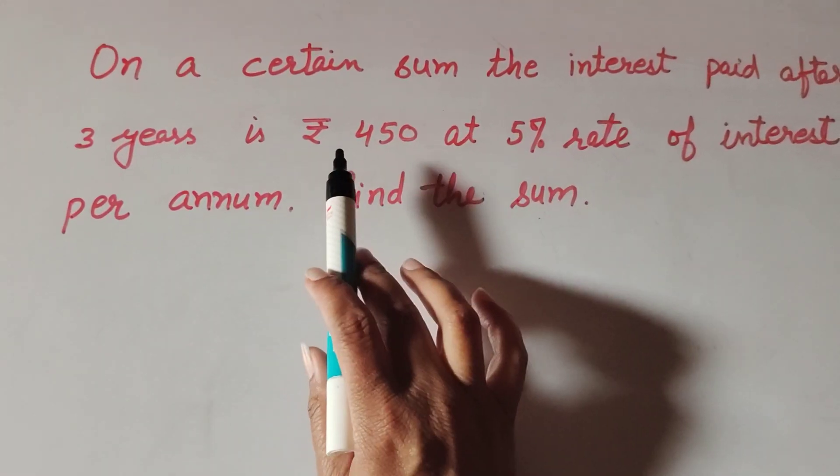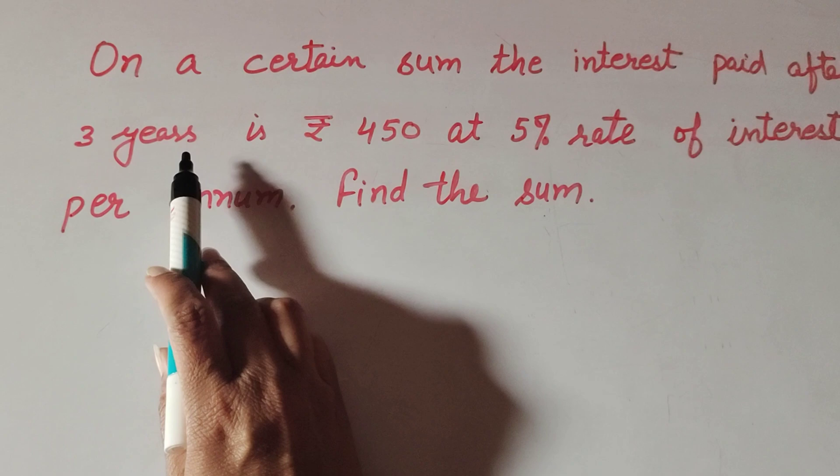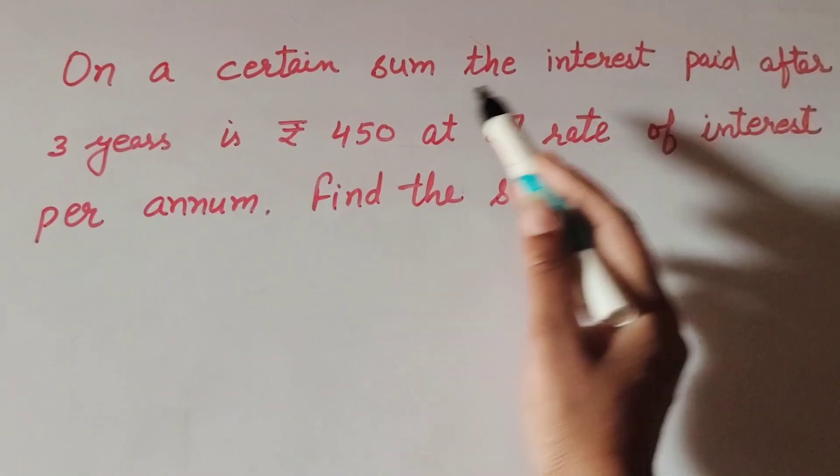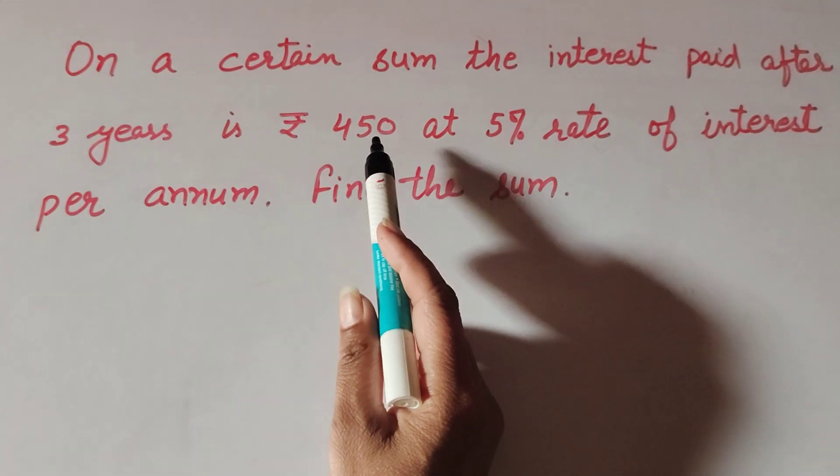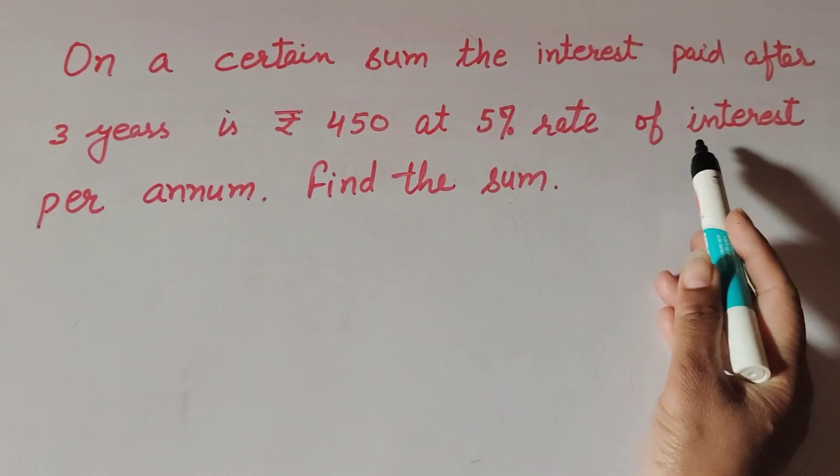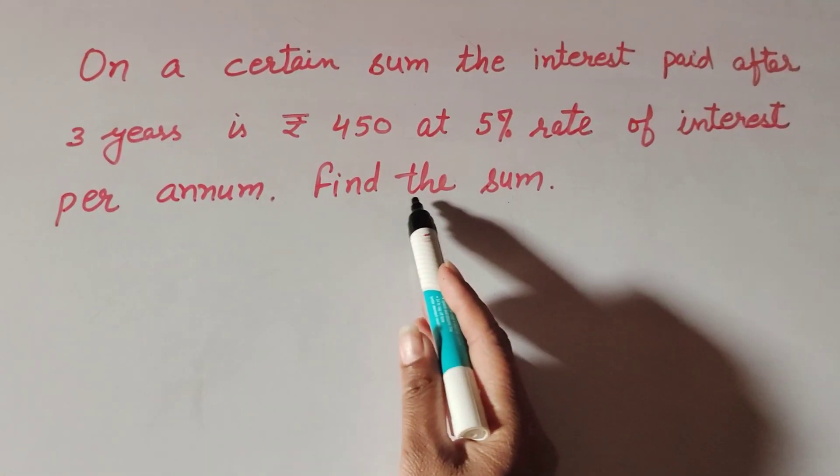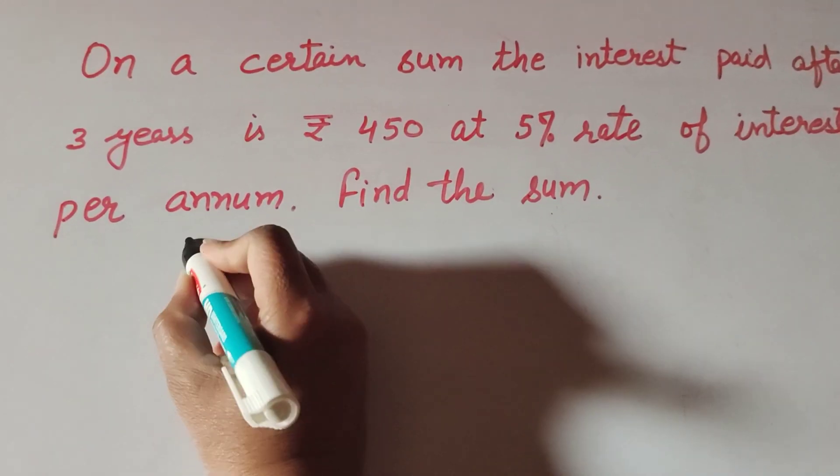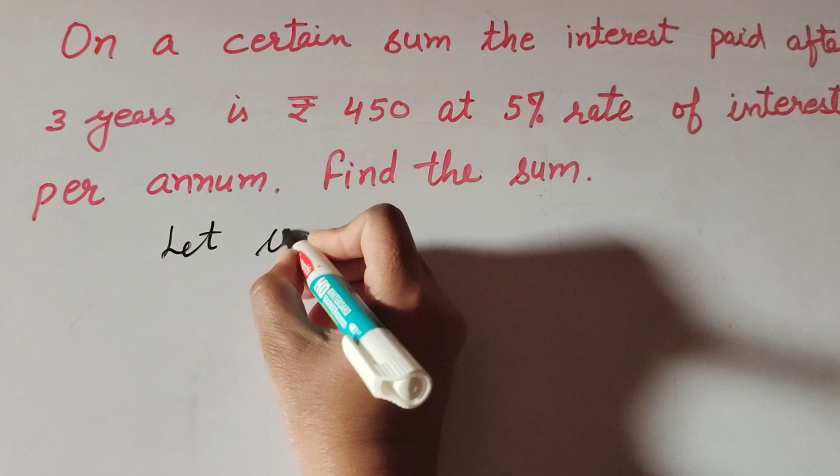The given information is ₹450 interest, three years is time. Interest paid after three years is ₹450 at 5% rate of interest, and we need to find the sum, which means we find the principal.